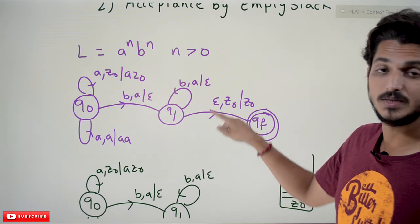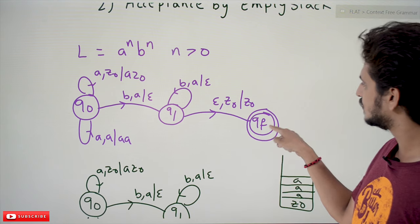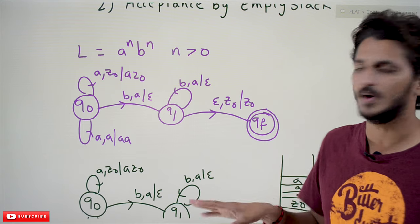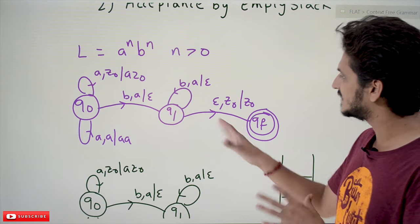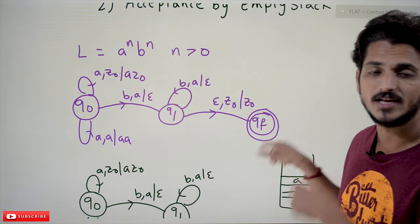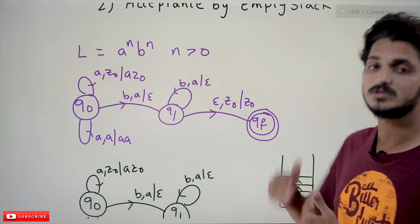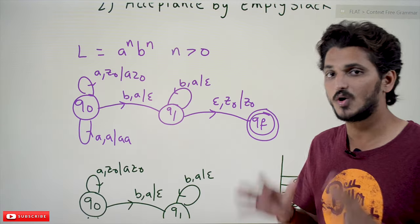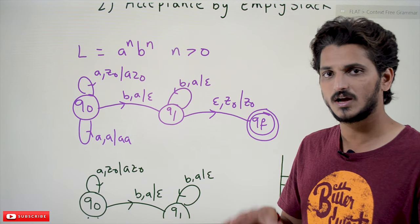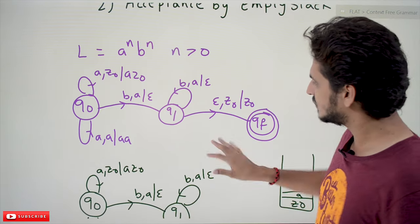When the input is completed (epsilon) and the stack top is z0, we move to qf and do no operation — z0 remains the same. qf is the final state. Final state logic doesn't consider what remains in the stack; if you are in the final state when the input string is complete, it is accepted.